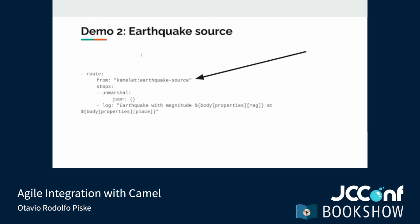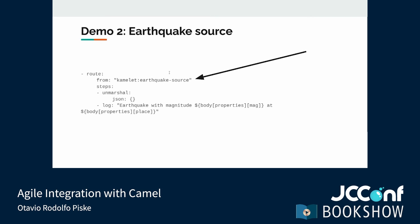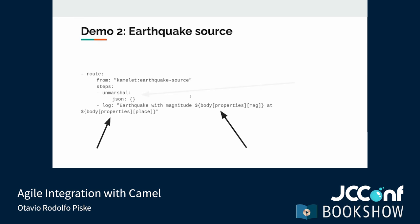Let's look at the YAML DSL powering this route. We can see that this route starts from a Camelet named Earthquake Source, making a reference to this Camelet from our catalog — you don't have to download the file or do anything else; the Camelet will be resolved automatically by CamelCore. The data comes in JSON format, and we unmarshall it to extract the data received. We use an empty block to use the default data format settings, then customize the log message to display the magnitude and place using an expression language to interpolate strings with specific elements from the extracted data.